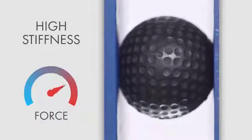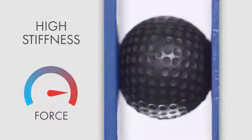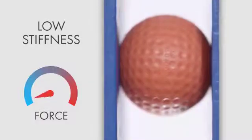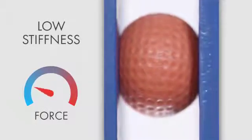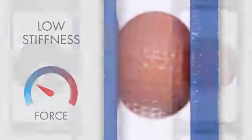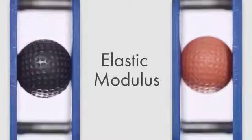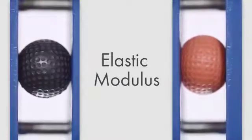The black ball is very hard to deform. The red ball is easy to deform. The stiffness is proportional to a material property called the elastic modulus.